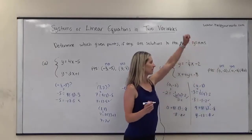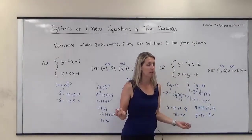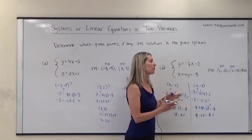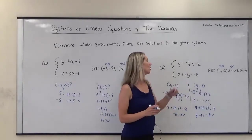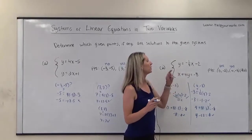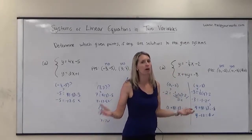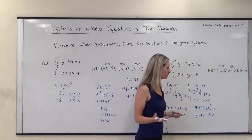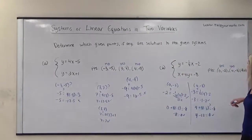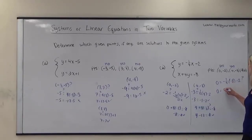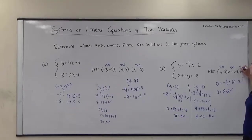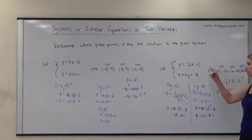Now, it might be tempting to automatically say that negative 8, 0 is also a solution, but remember the infinitely many solutions lie on a straight line — there are lots of other points that don't lie on that line, so we still need to check. Let's plug in negative 8, 0: does 0 equal negative one-fourth times negative 8 minus 2? Negative times negative is positive, and a fourth of 8 is 2, so 2 minus 2 equals 0. Yes, this one is also a solution.